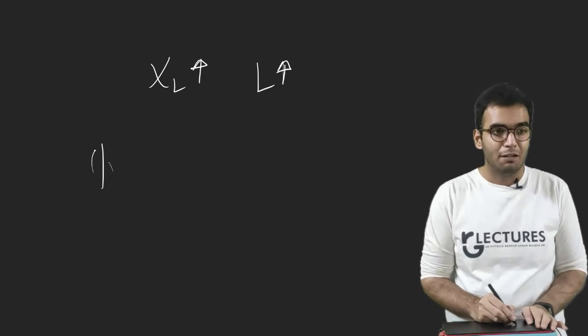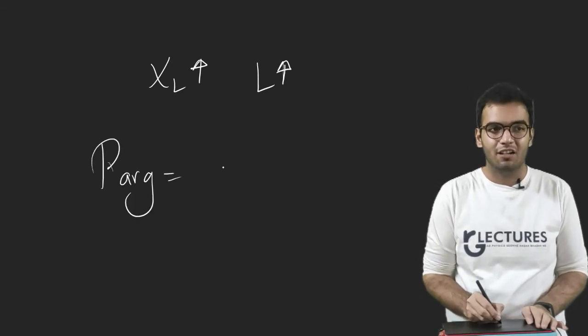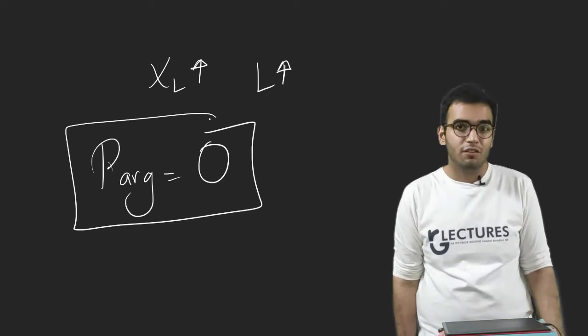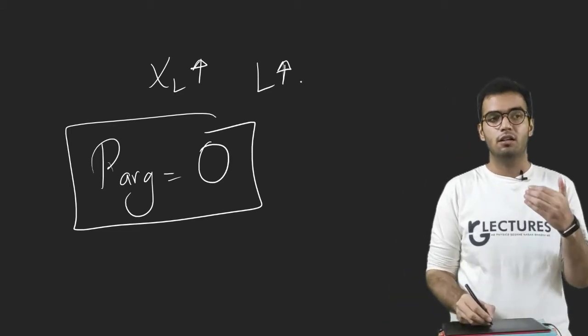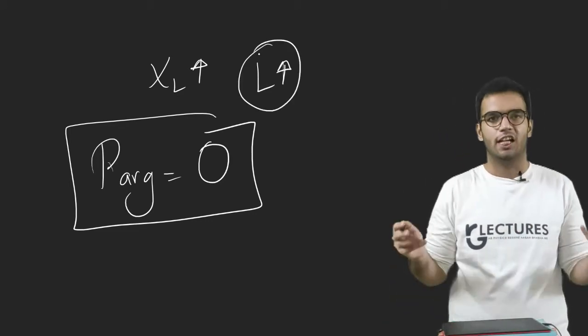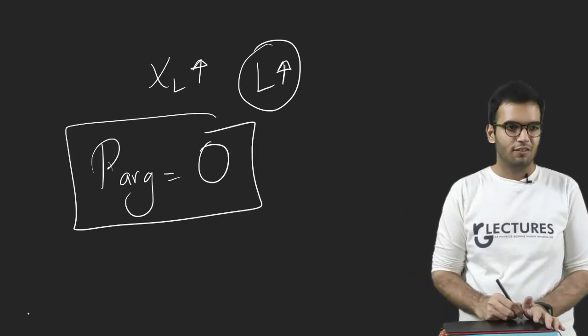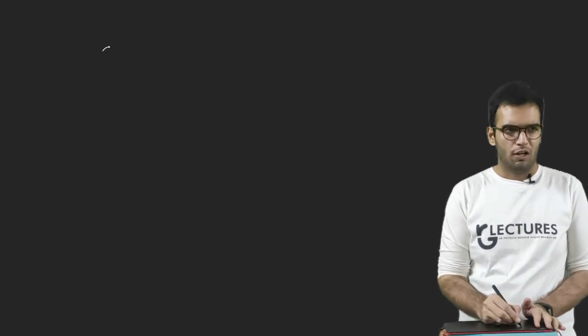Now we have studied that power consumed by an inductor is zero. So basically the function which resistor was doing will now be done majority by an inductor because it does not consume any power. So this is the concept behind the choke coil.